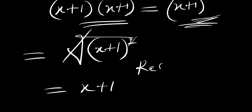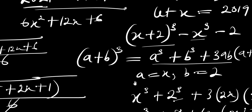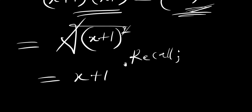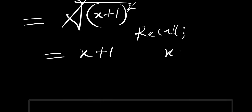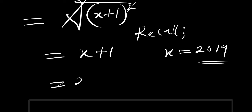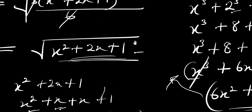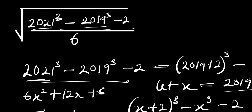Now recall the value of x — we had let x equal 2019. Inserting that, we get 2019 plus 1, which equals 2020. So the value of our final answer is simply 2020.